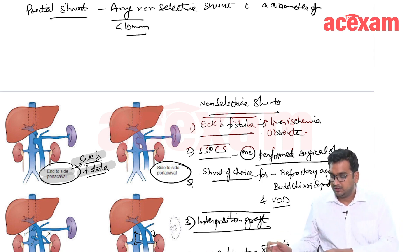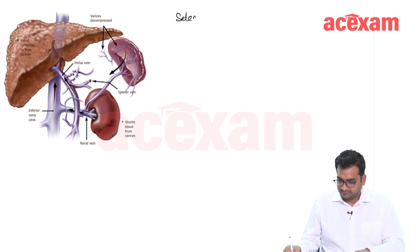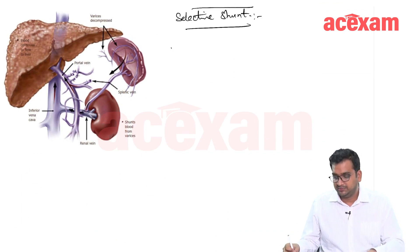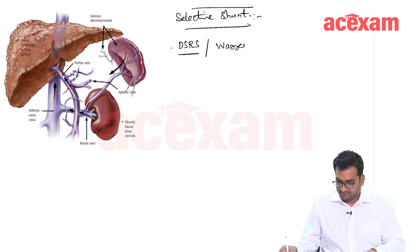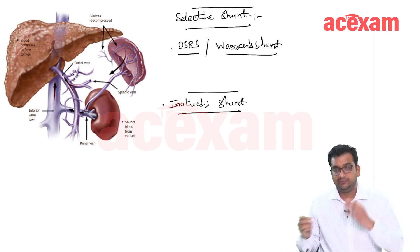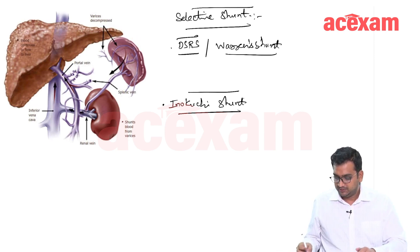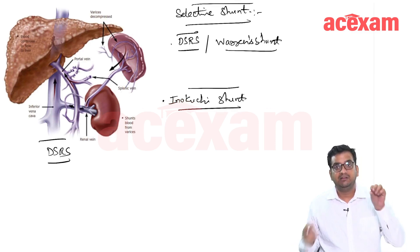Now coming to the selective shunts. There are two selective shunts: the first is the DSRS, also known as Warren's shunt, and the second is the Inokuchi shunt. In DSRS, the splenic vein is divided and ligated. The end of the splenic vein going towards the spleen is anastomosed with the renal vein. The whole portal circulation remains on this side, and only the spleen is decompressed to the renal vein.